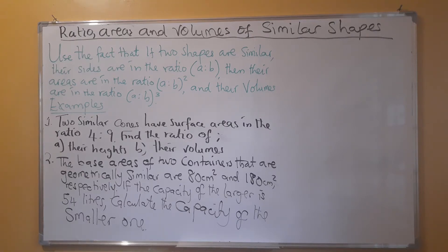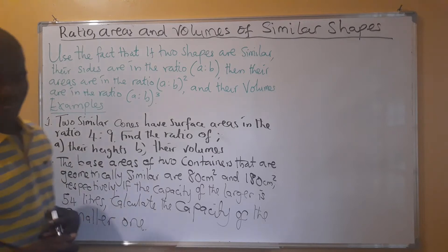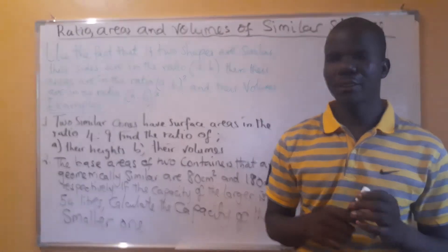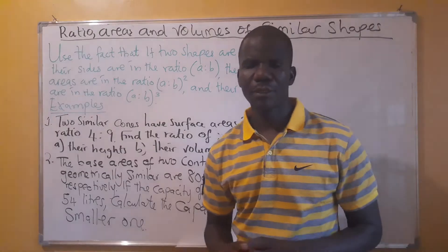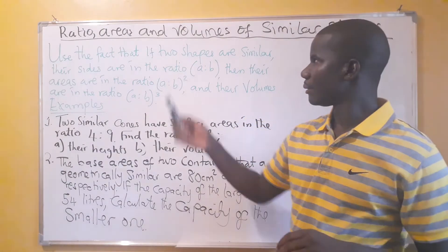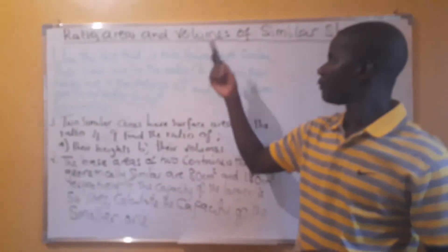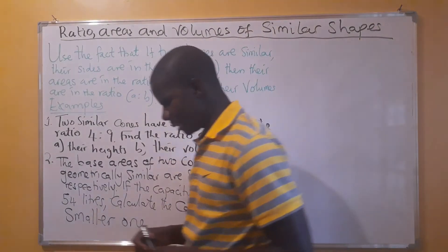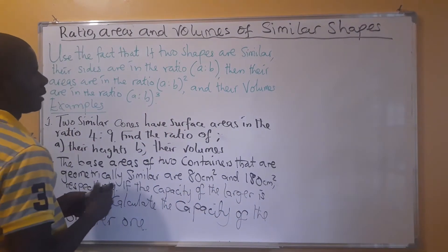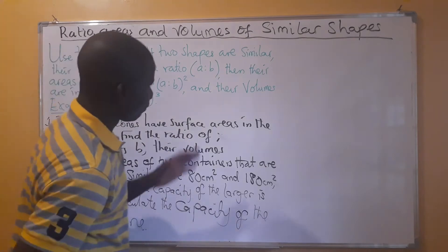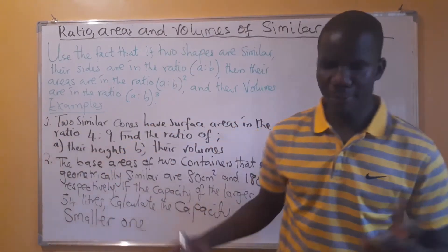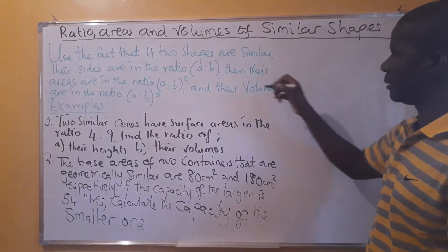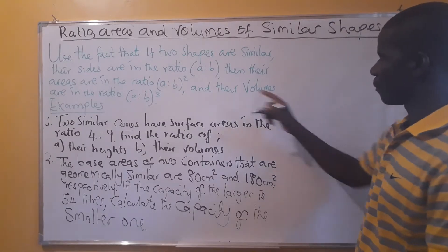Hello, welcome to the last lesson of this topic — similarity and congruence — where we are looking at ratios, area, and volume combined. In the previous lesson I talked about area of similar shapes and volume, so if you have not watched those videos I would request that you go and watch them first. We are using the fact that if we are given the ratios of similar shapes, we can derive other ratios.